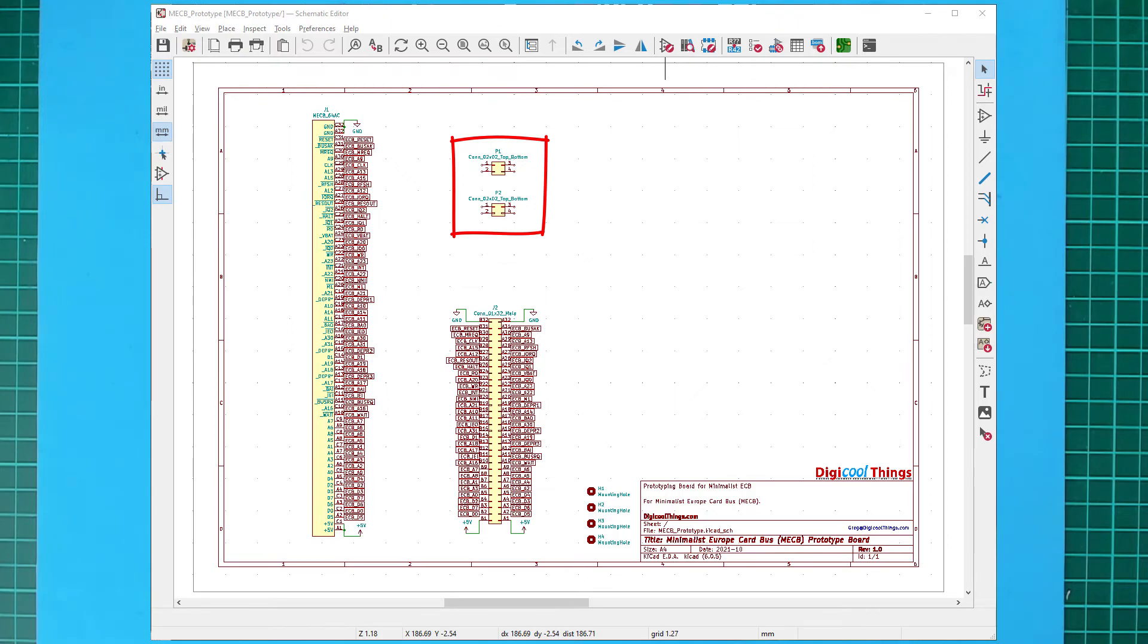which I've then associated with custom footprints for the main grid, and for the two power bus bars running along each side of the board. You can see I've also updated the description panel just to complete the schematic.